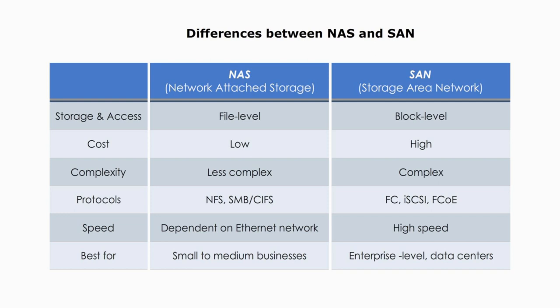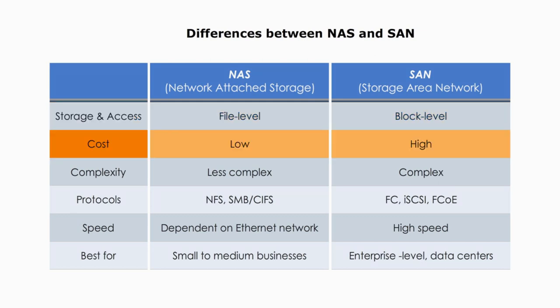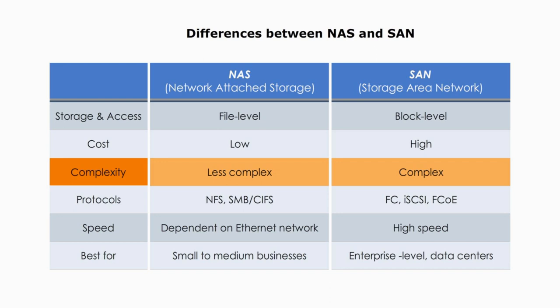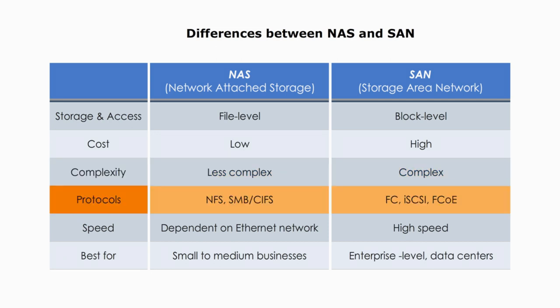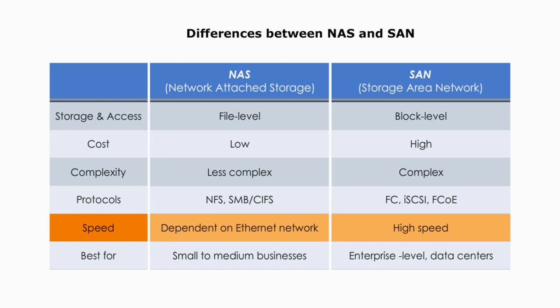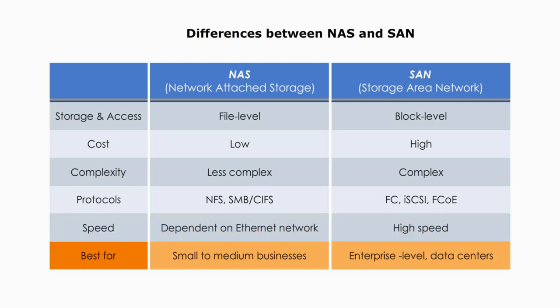Let me talk about the differences between NAS and SAN. In terms of storage and access, NAS is file-level and SAN is block-level. NAS costs much less, while SAN can easily cost millions of dollars for a big data center. NAS is less complex, while SAN is highly sophisticated. NAS protocols include file-level storage systems and file transfer over HTTP, while SAN uses Fiber Channel, iSCSI, or Fiber Channel over Ethernet as data transfer protocols. NAS is much slower. NAS is best for small to medium-sized businesses, while SAN is best suited for enterprise-level and big data centers.